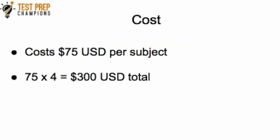The cost is $75 per subject, and there are four subjects on the GED test that you have to pass. So 75 times four is $300, so you're going to have to pay $300 in total if you pass all the subjects on your first try.